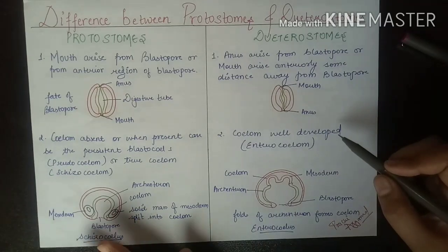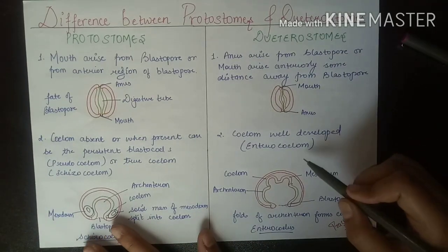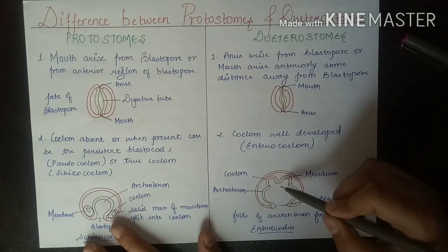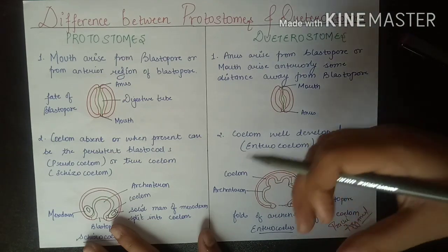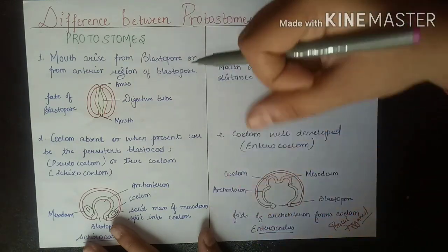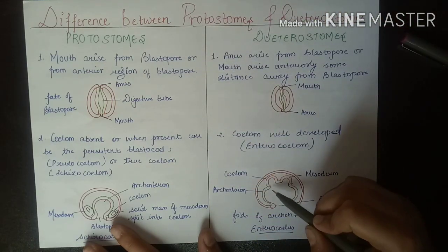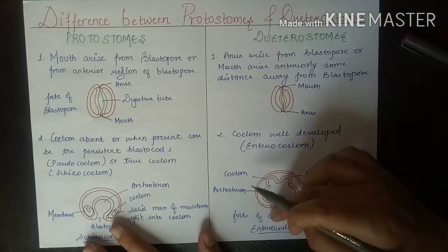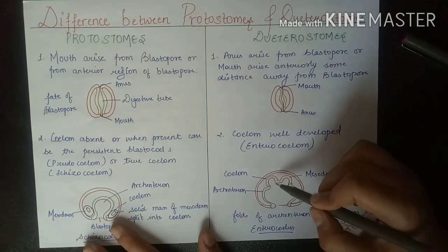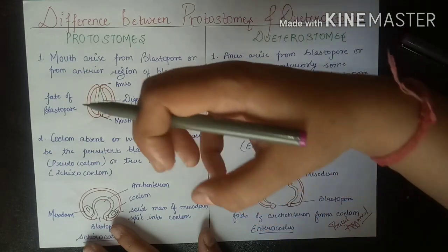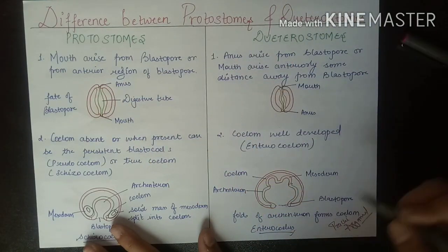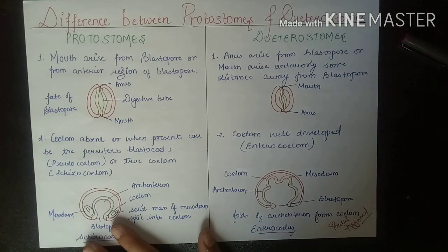In deuterostomes, the coelom is well developed and is known as an enterocoelom. In enterocoelom, the archenteron forms the mesoderm — it pinches off into three parts, creating folds. The coelom formed this way is known as an enterocoelom.